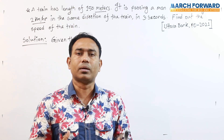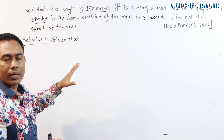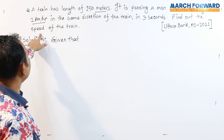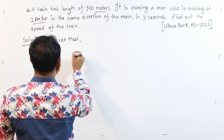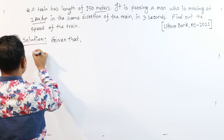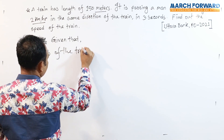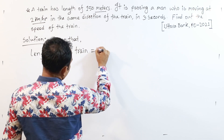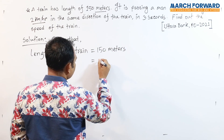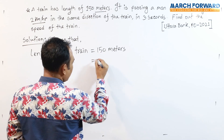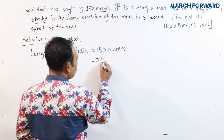The train is moving. If we convert the length of the train, given that the length of the train is 150 meters. If we convert the length of the train, then we have written like this. We have to take a look at the calculations. The number of the calculations is 0.15.